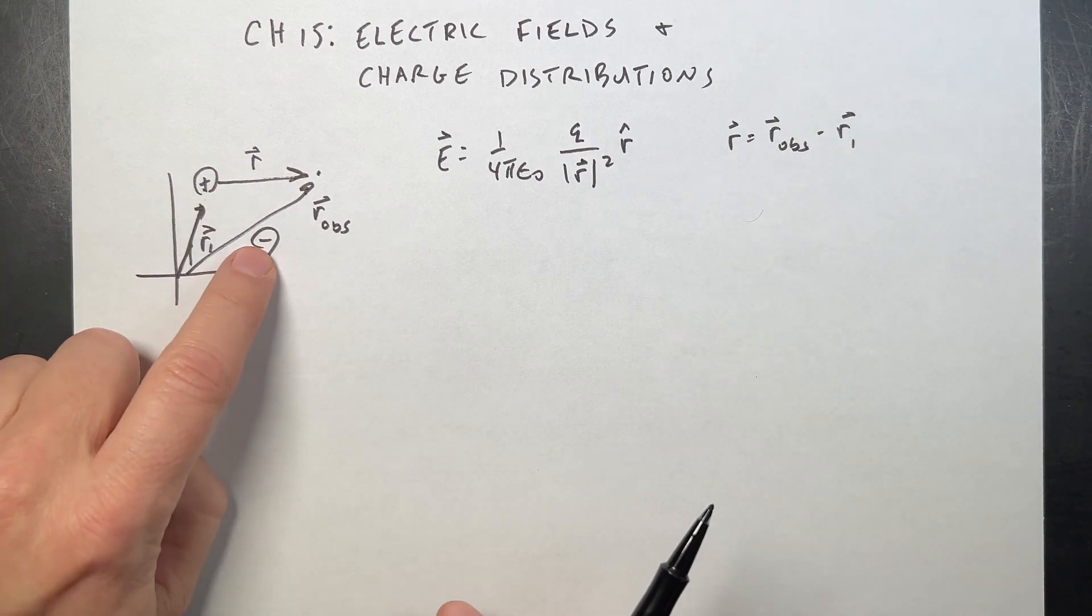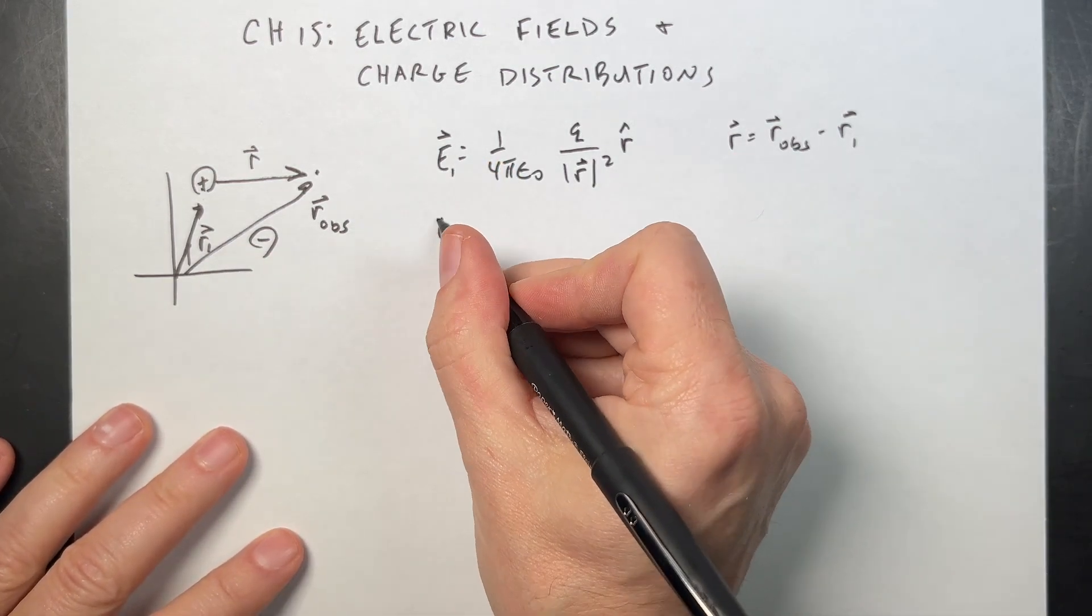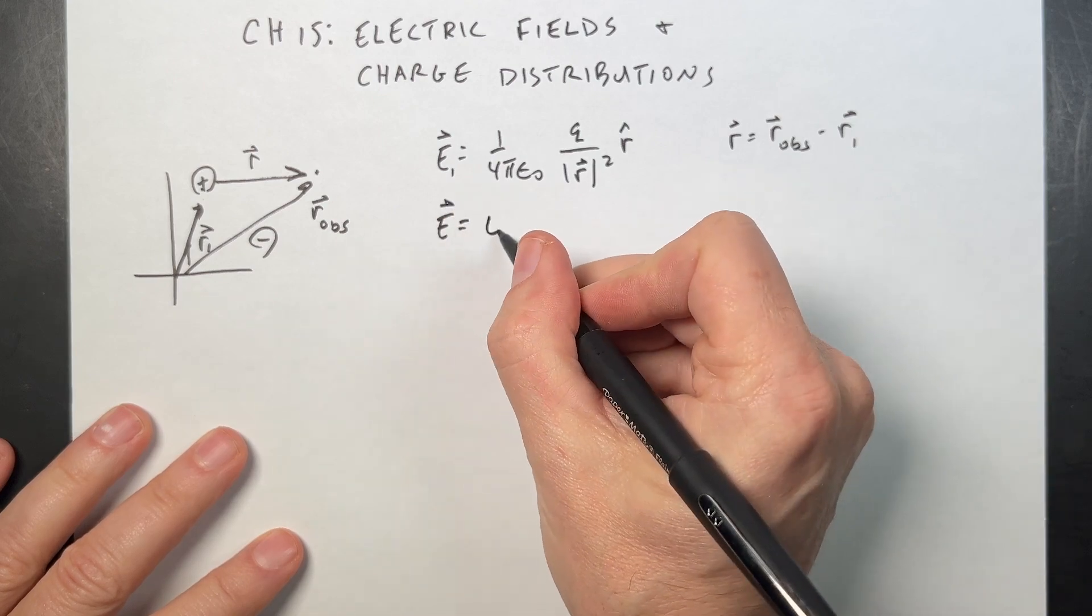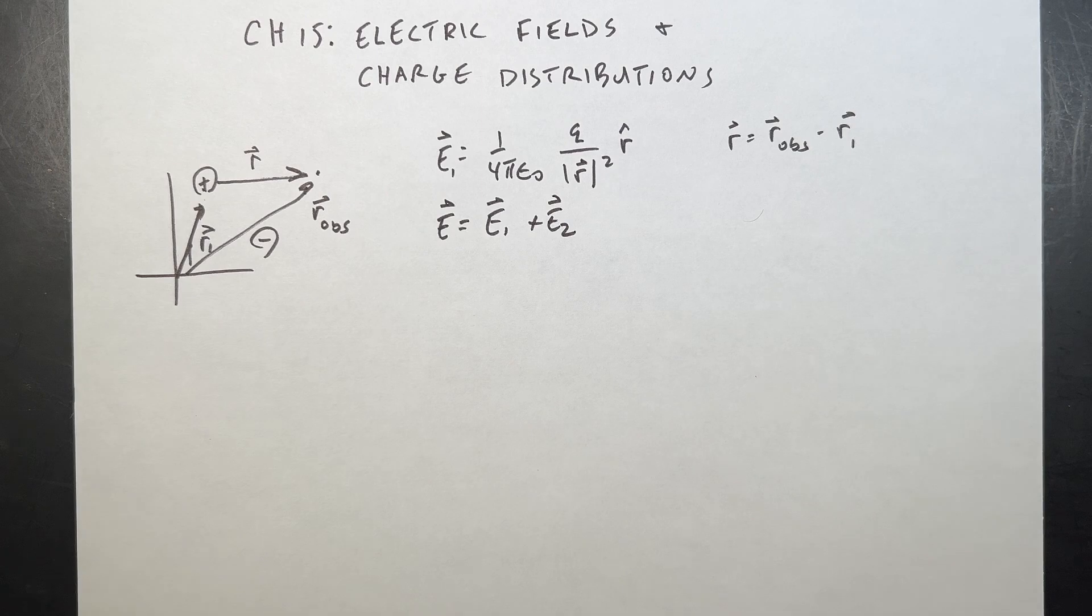Now I can repeat the same thing for this electric field, and I can get the total electric field, let's call that E1. The total electric field is just the vector sum E1 plus E2.